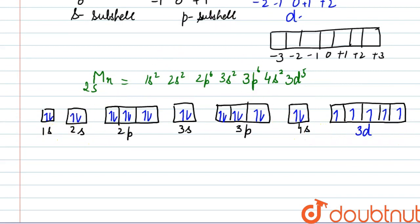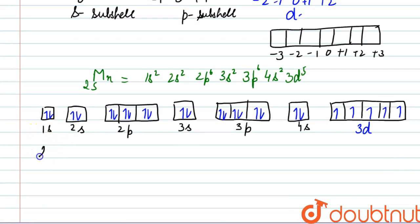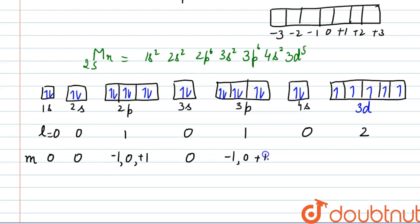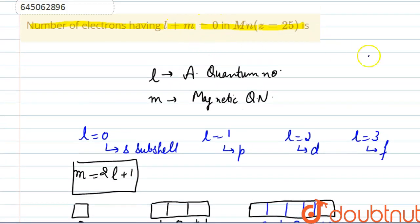Now we identify electrons with L plus M equal to zero. The value of L is 0 for s subshells and 1 for p subshells, and the M values are: 0 for 1s; 0 for 2s; minus 1, 0, plus 1 for 2p; 0 for 3s; minus 1, 0, plus 1 for 3p; 0 for 4s; and minus 2, minus 1, 0, plus 1, plus 2 for 3d.